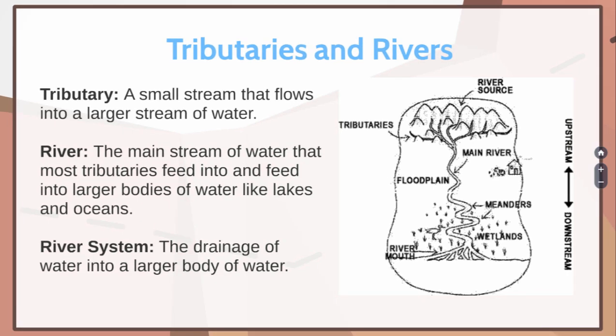A watershed is made up of a lot of tributaries and rivers. Just as a reminder, a tributary is a small stream that flows into a larger stream of water, and that larger stream is usually a river. A river is the main stream of water that most tributaries feed into, and the river will eventually feed into a larger body of water like a lake or an ocean. When you put all these together, that makes the river system — the drainage of water into a larger body of water like the ocean or a lake.